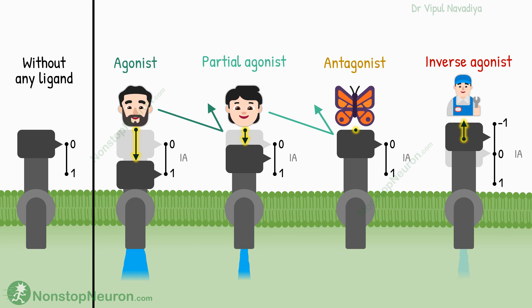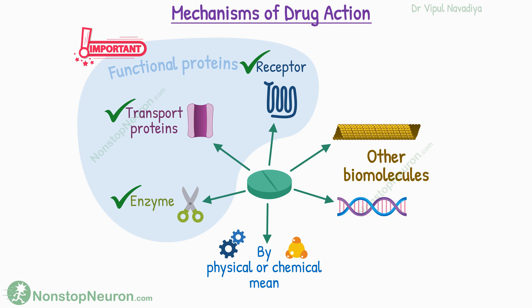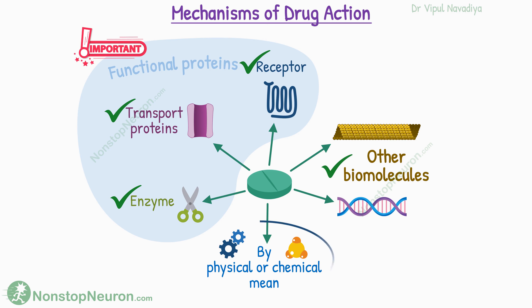So this is all that drugs can do with receptors, completing the major drug targets. The most common targets are functional proteins — enzymes, transport proteins, and receptors. But some drugs target other biomolecules: vincristine binds with tubulin, a structural protein, preventing cell division during mitosis; busulfan binds with DNA and interferes with replication. Finally, some agents act by purely physical or chemical means — the immediate action includes pure physics or chemistry rather than biology.